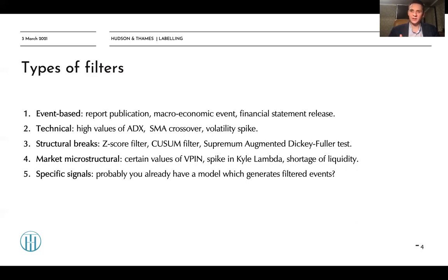Second, you can use technical features. For example, high values of the Average Directional Index (ADX), SMA crossovers, or volatility spikes can make price prediction easier, because in this case the market becomes more vulnerable and more predictable. We can also use various structural break filters such as the Z-score filter or the Supremum Augmented Dickey-Fuller Test (SADF). Market microstructural features can also be filtered — certain values of VPIN, a spike in Kyle's lambda, or shortage of liquidity can sometimes mean the market is easily predictable. Finally, if you already have your own proprietary model that helps filter out events, you can take that model and try to build a financial machine learning model on top of it.